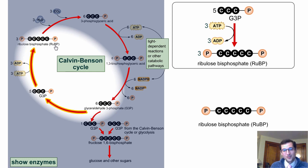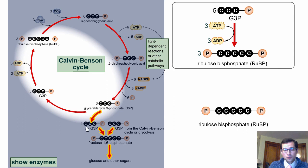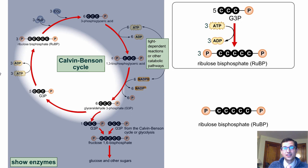But wait — we haven't totally answered the question yet, because once more, we've found another source of energy that needs explaining. In order to make the glucose, we need G3P. In order to make the G3P, we need NADPH and ATP. So we're left asking the question: where in the chloroplast did that ATP and that NADPH come from, and where did they get their energy from?